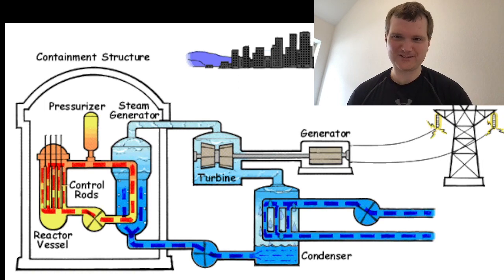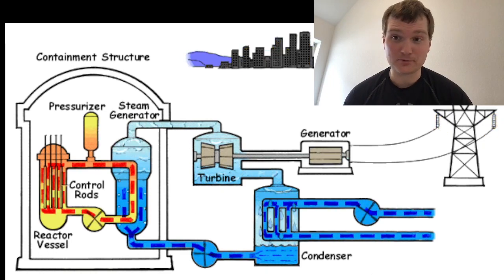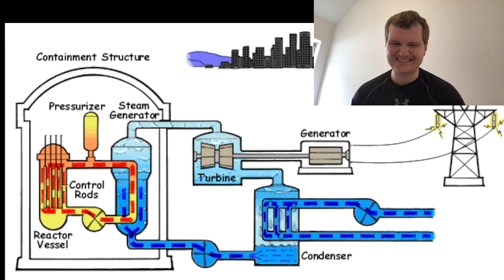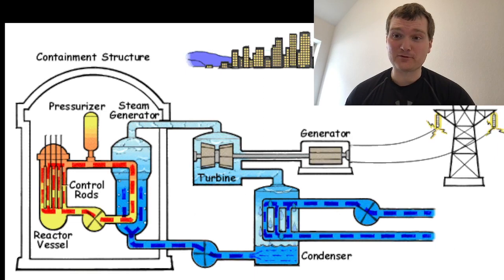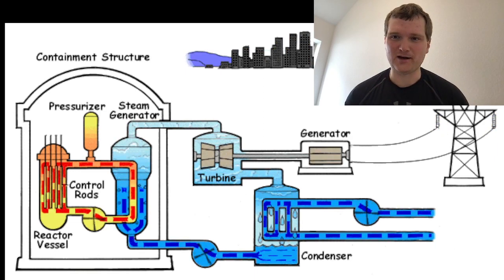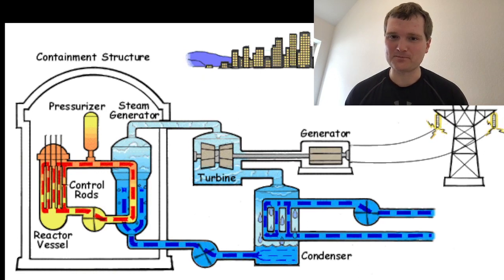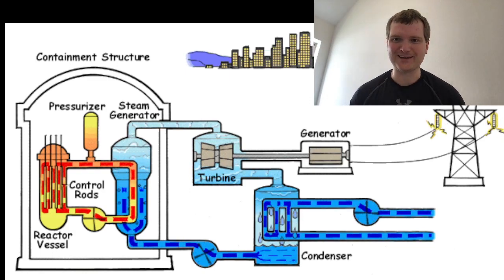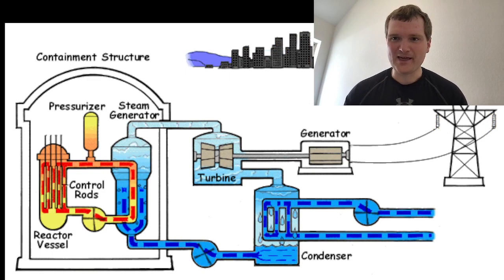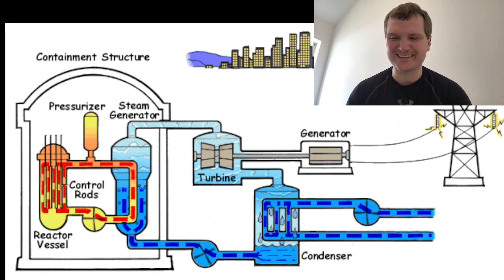But there's one major thing he left out as far as a pressurized water reactor: the pressurizer. Yes, everything that's done in the reactor vessel is at very high pressure on the order of 2200 PSIG plus. So that water, it's water, but it's very hot water on the order of over 500, 600 degrees Fahrenheit. So yeah, the pressurizer is a very important piece of the pressurized water reactor that he left out.